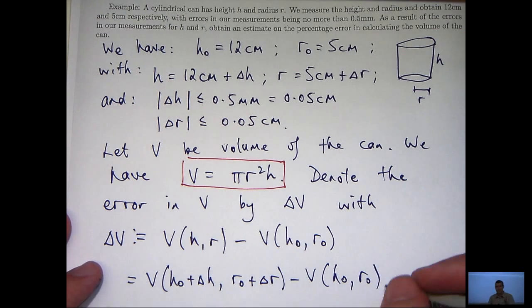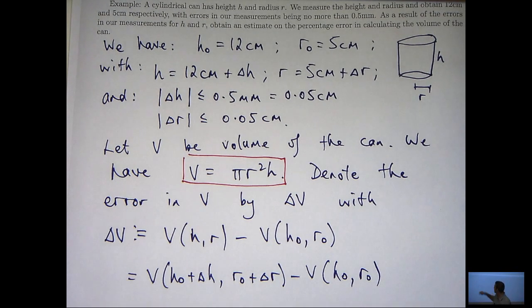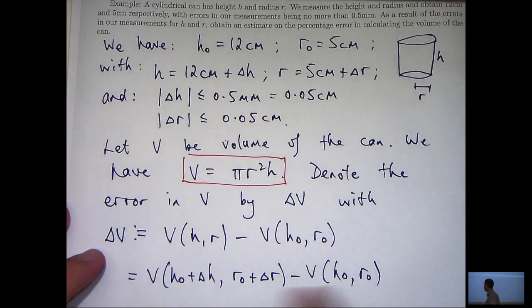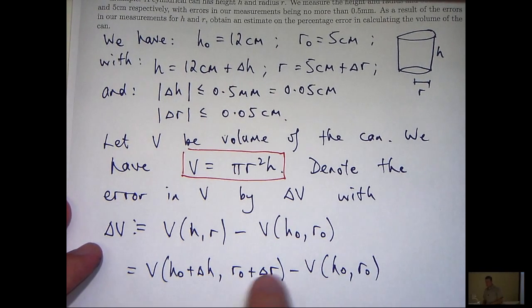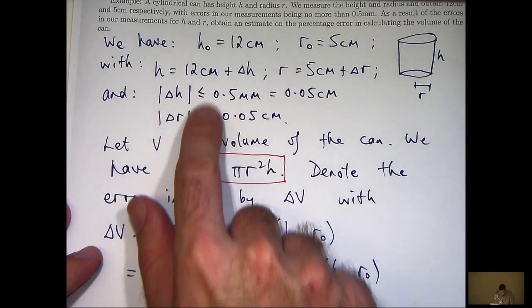And similarly for r. So what we'd like to do is try to calculate this. But the point is we can't because delta h and delta r are unknown. All we do is have two estimates on them.